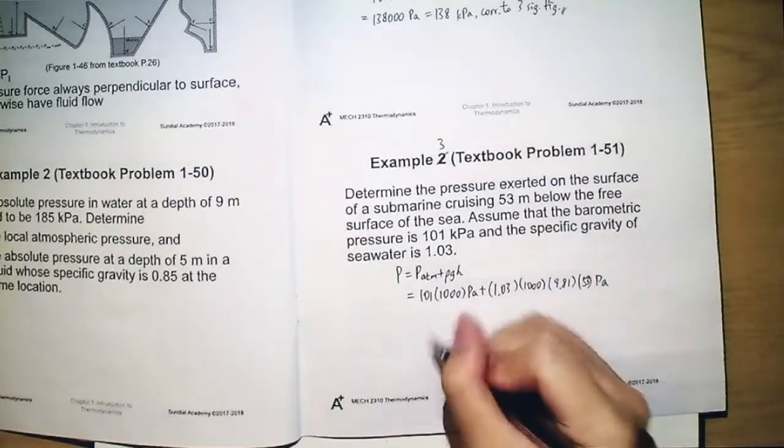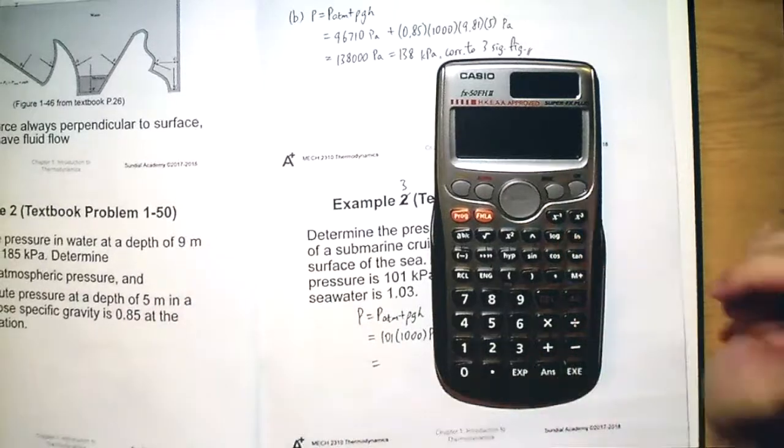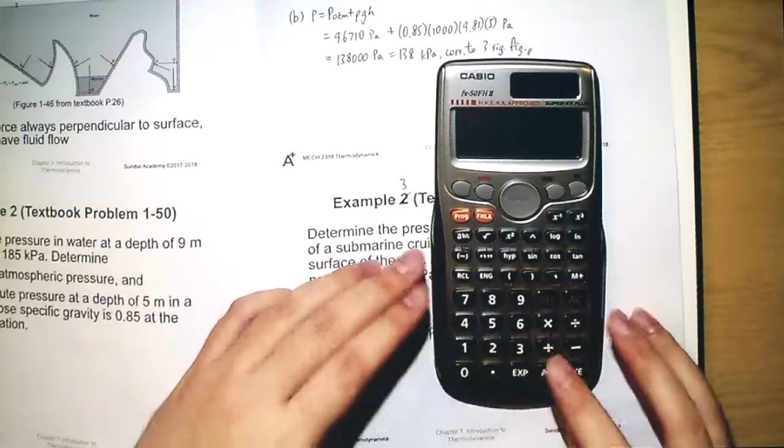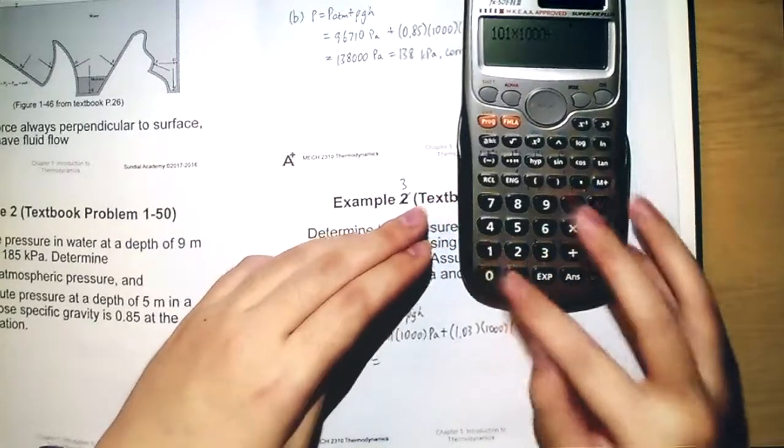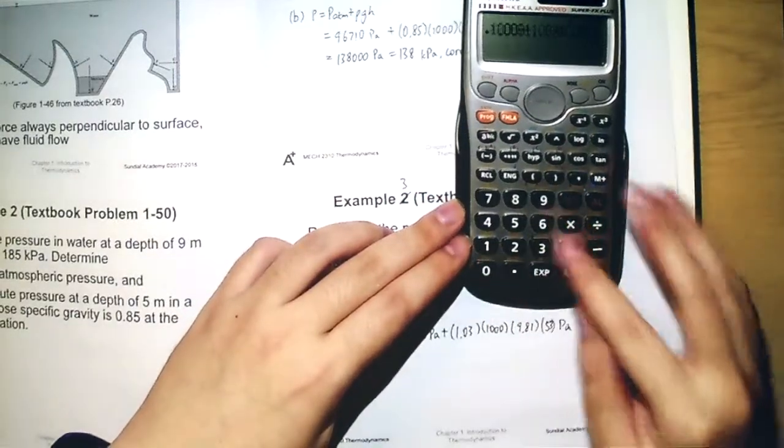And after that, you can calculate it. That will be equal to 101 times 1000, plus this one is 1.03 times 1000, times 9.81 times 53.